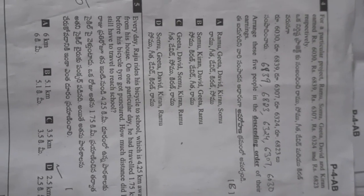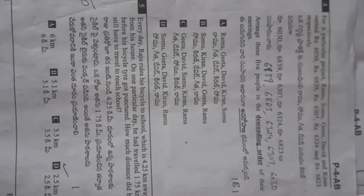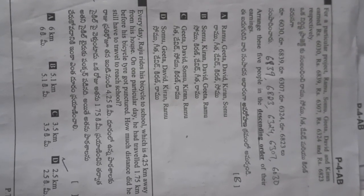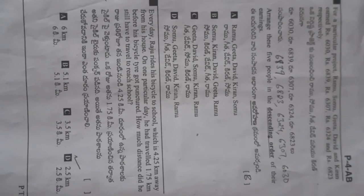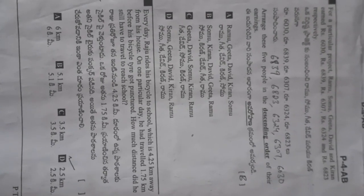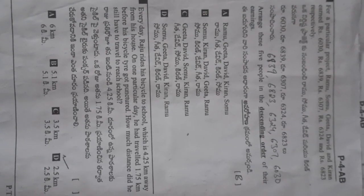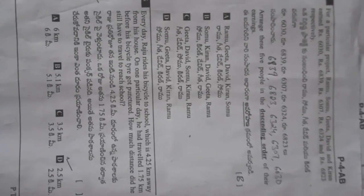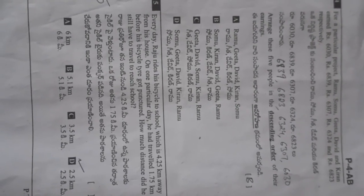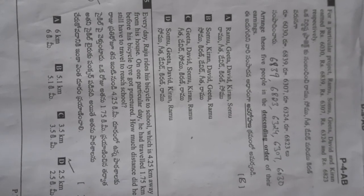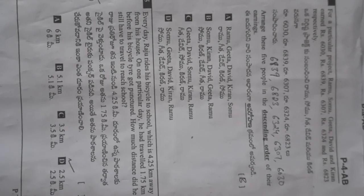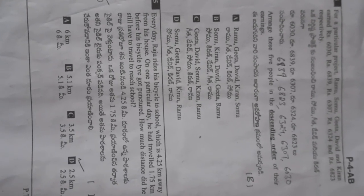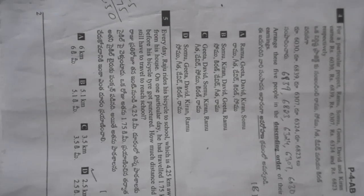For a particular project, Ramu, Somo, Geetha, David, and Kiran earn 6030, 6839, 6307, 6324, and 6123 respectively. Arrange the five people in descending order — that means big to small. So the order is: 6839, 6824, 6324, 6307, 6030. The correct option is B.